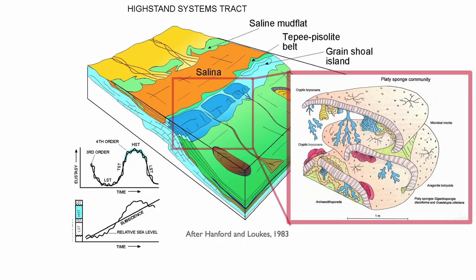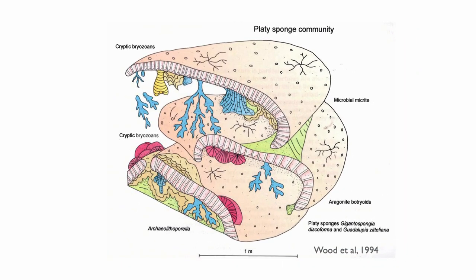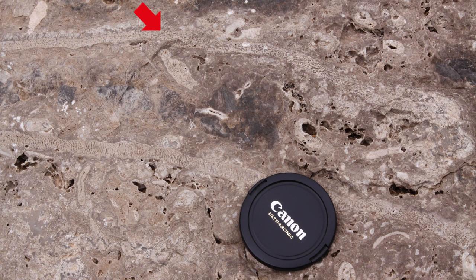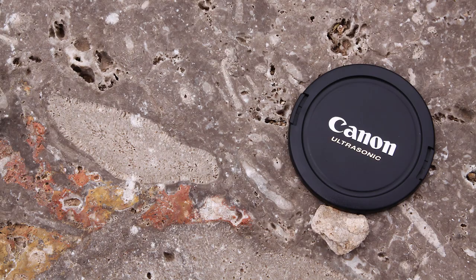This Permian Basin reef is characterized by two different types of assemblages. The first is a platy sponge community associated with bryozoans. The platy sponge community forms the backbone and framework of the reef, and these are giant sponges — about two meters across. You can see bryozoans dangling from the sponge. Here's another example of the same reef with a smaller but clearly visible sponge. This is a beautiful location very close to the entrance of Carlsbad Cavern National Park.